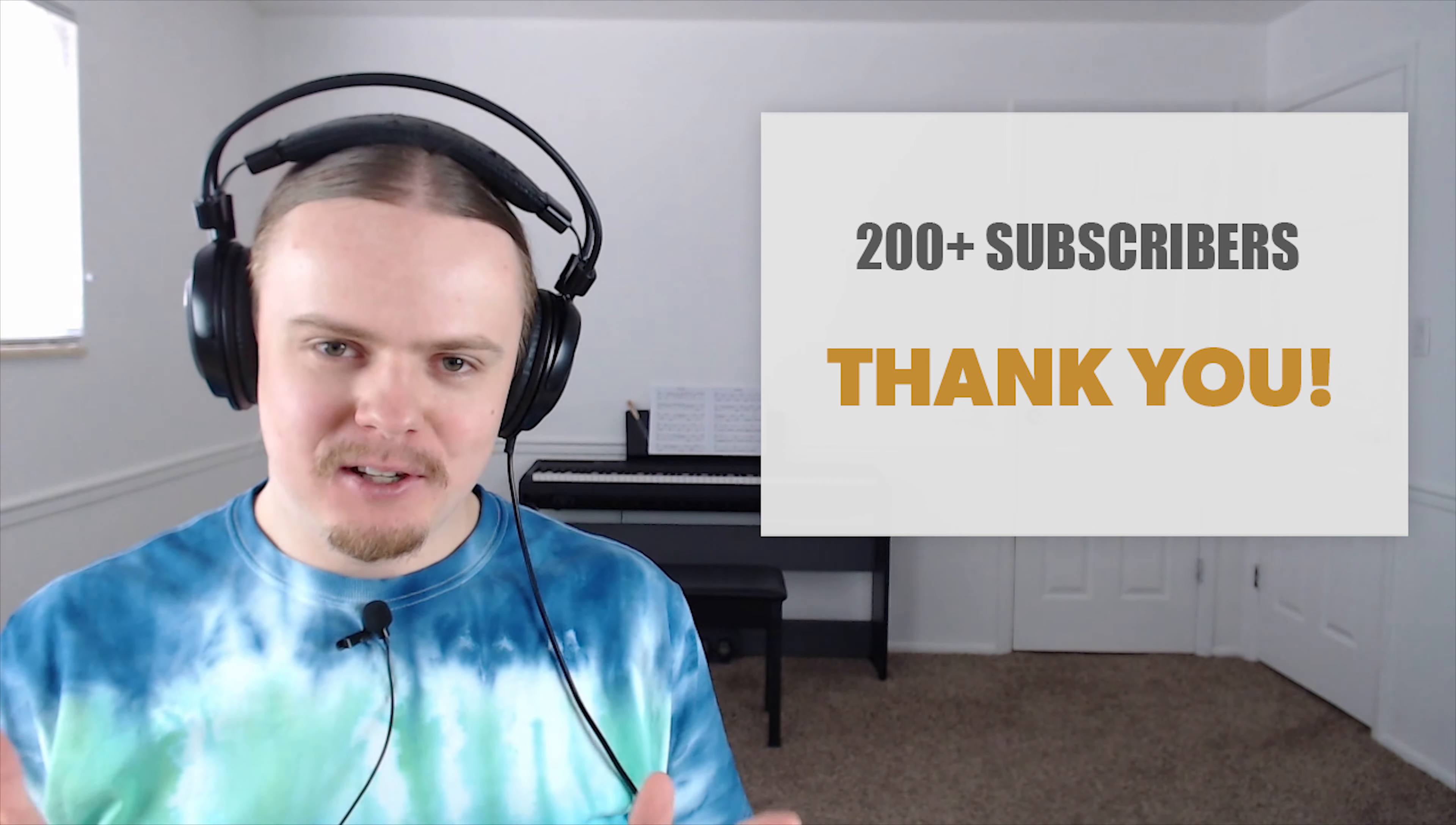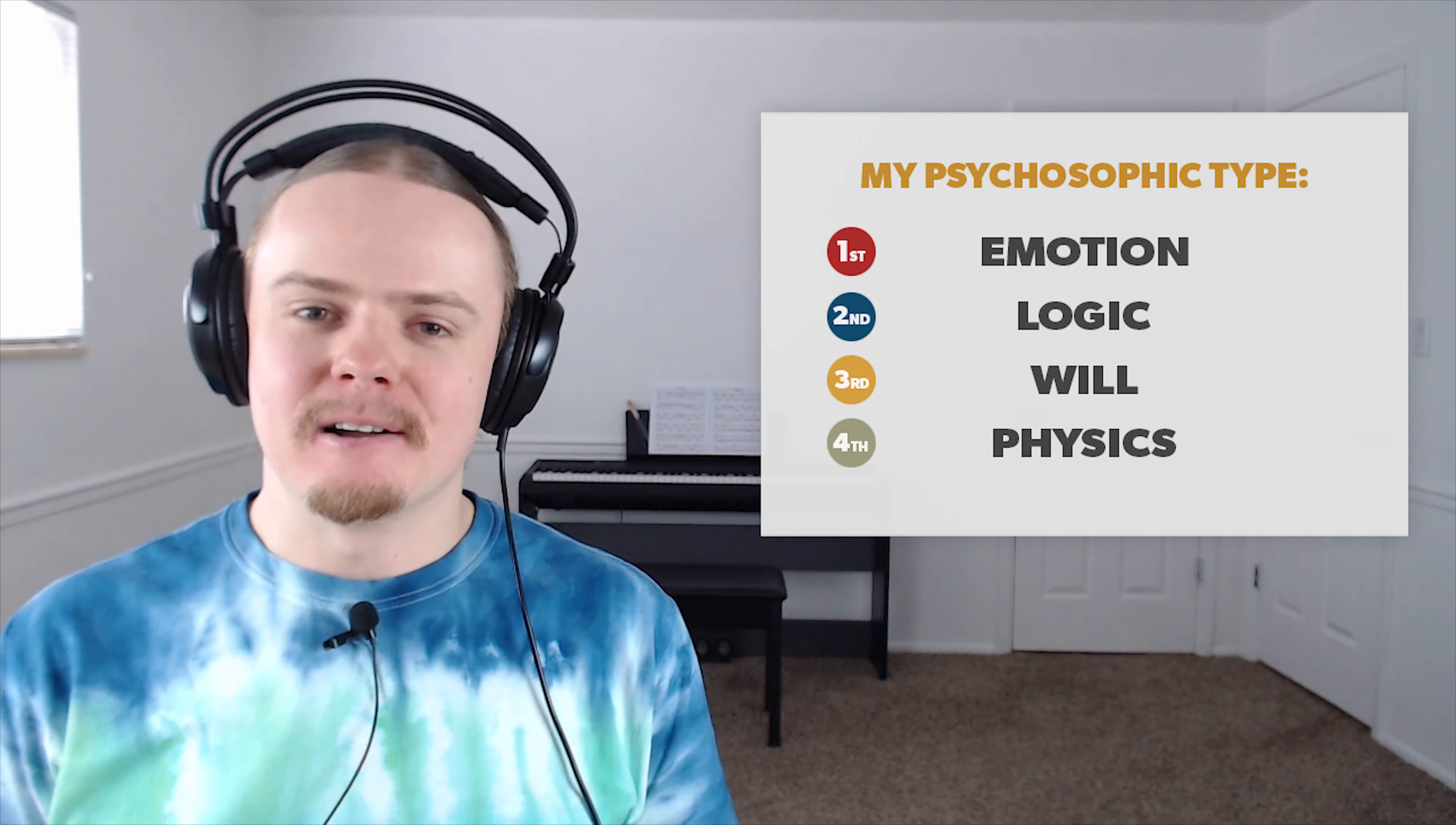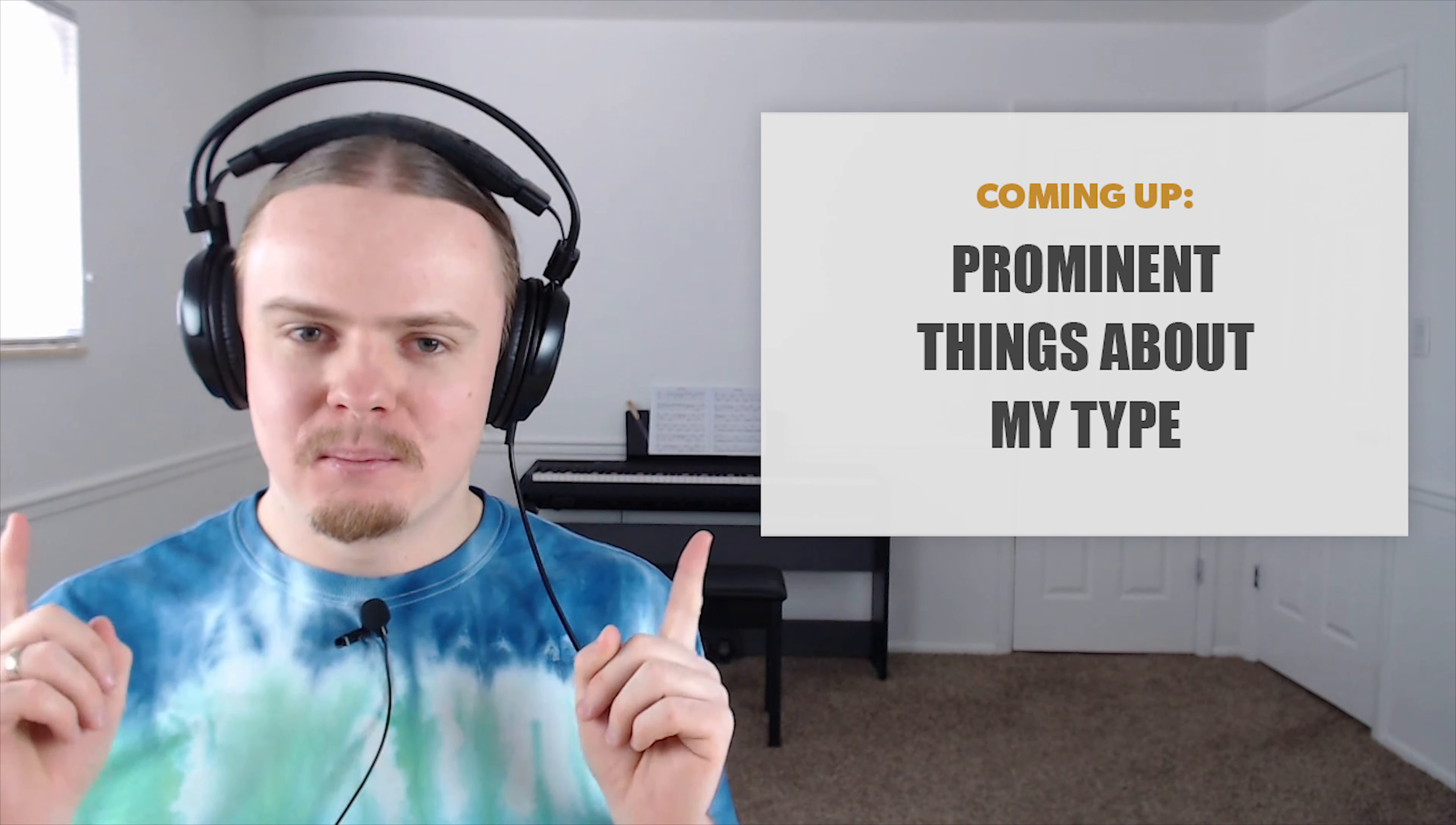So the main topic of this video and the question that I've been asked a lot is what is my type? My socionics type is ESI, Ethical Sensory Introvert. I am from a third quadra, and my psychosophic type is ELWP, which is Emotion Logic Will Physics. In this video, considering the special occasion, I decided to share with you some of the most prominent traits of my socionics type. But before we get into that, I have an important announcement.